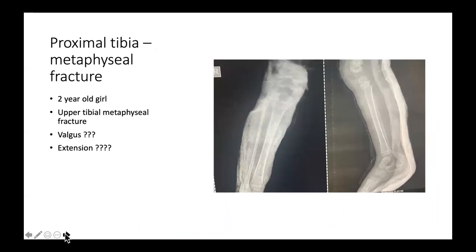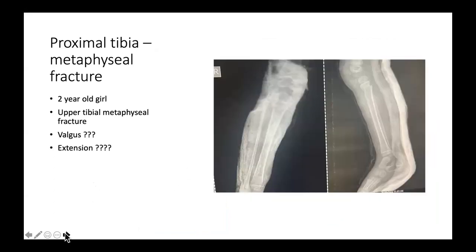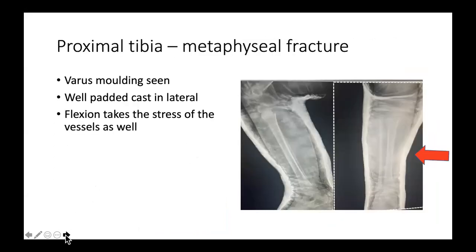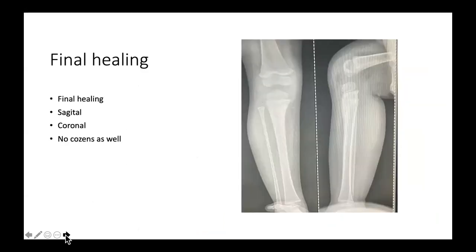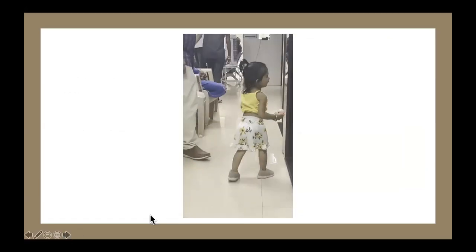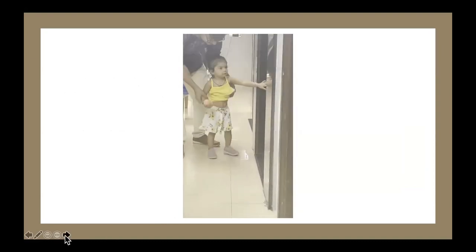A second patient was a two-year-old girl with an upper tibial metaphyseal fracture — notably a complete fracture, not greenstick. A cast was given in slight flexion due to posterior angulation, with a varus mold maintained throughout. Good varus reduction and alignment were achieved. On longer follow-up for another reason, she did very well with no valgus tendency.